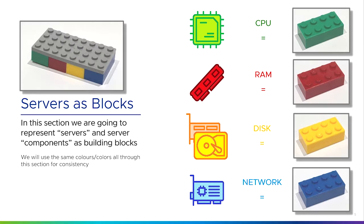So all we're really doing is abstracting the concepts of CPU, RAM, disk, and network — or compute, storage, and network — into simple colors, so we can build some simple models to explain how we used to do things and how we do them now.